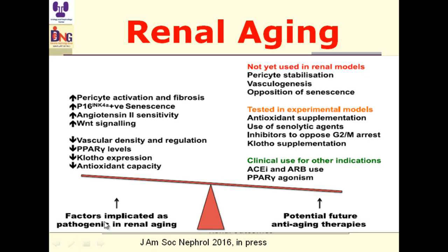A figure shows factors implicated in renal aging. Importantly, potential future anti-aging therapies include: drugs already in clinical use such as RAAS inhibitors and PPAR-gamma agonists; agents tested in experimental animals waiting for human studies such as antioxidant inhibitors to oppose G2M arrest and senolytic agents; and potential therapies not yet used in renal models such as telomere stabilization, vasculogenesis, and opposition of senescence.